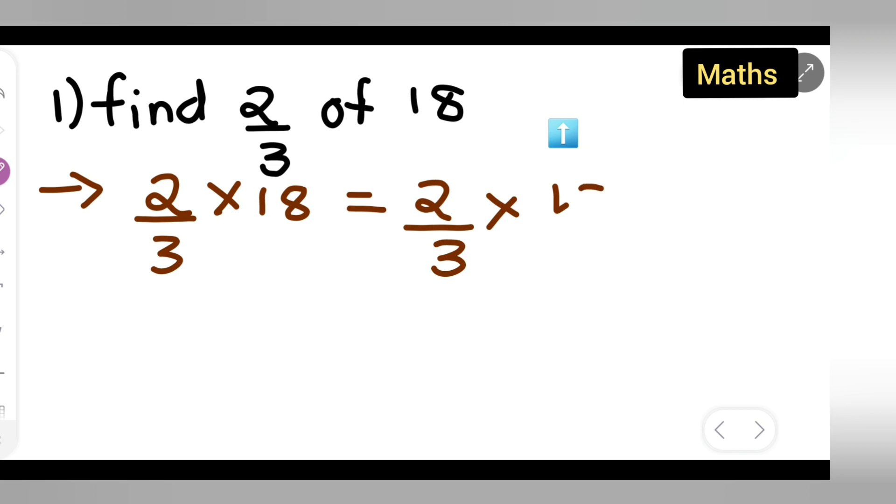Here you can write down 18 upon 1. The denominator is not there, so you have to consider it as 1. Next, you can cancel this 3: 1 times 3 are 3, 6 times 3 are 18.